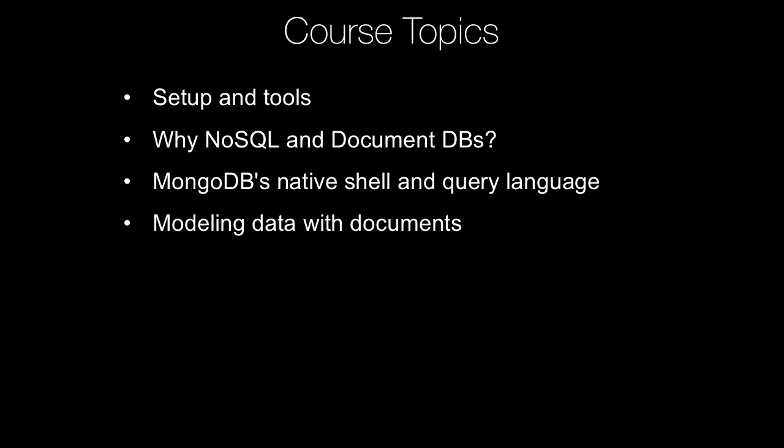Next, we're going to talk about modeling data with documents rather than tables. You may have heard of third normal form and normalizing data in a relational database. To some degree, that knowledge carries forward into document databases, but there are certainly many other trade-offs and different types of modeling scenarios to follow. You certainly don't want to just normalize your document database — you'd be missing all of the benefits. In MongoDB, you model your data a little differently with different trade-offs and considerations.